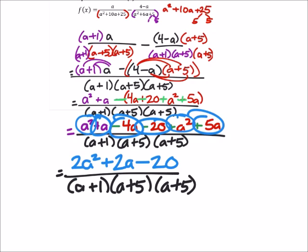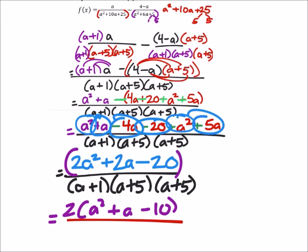Well, I should factor out this numerator just because I see that the coefficients and the constant are all even. So I'm going to factor out a 2 from each one of those. So I'm going to have 2 times a squared plus a minus 10. And it's going to be over the same denominator.